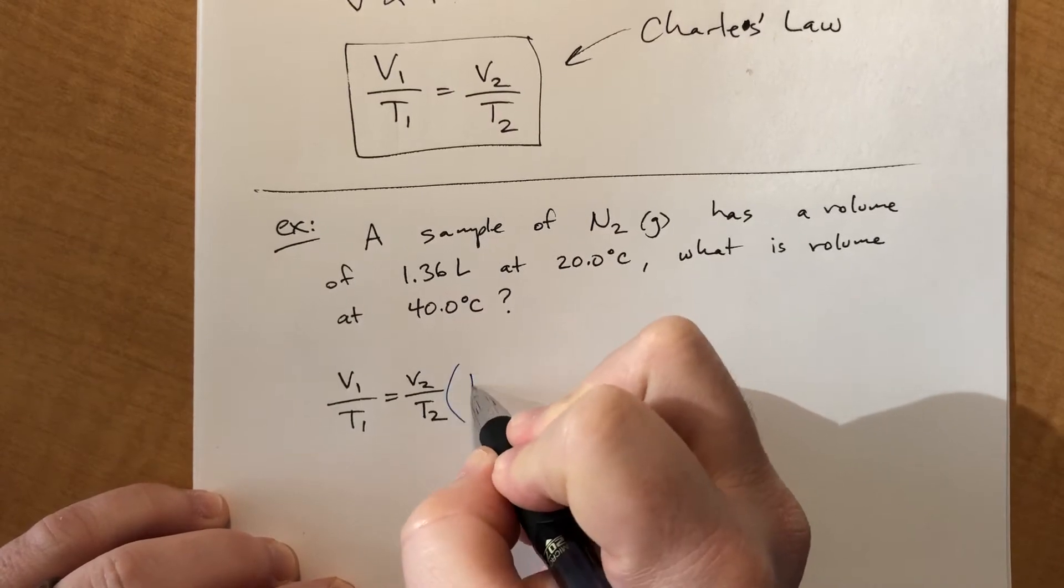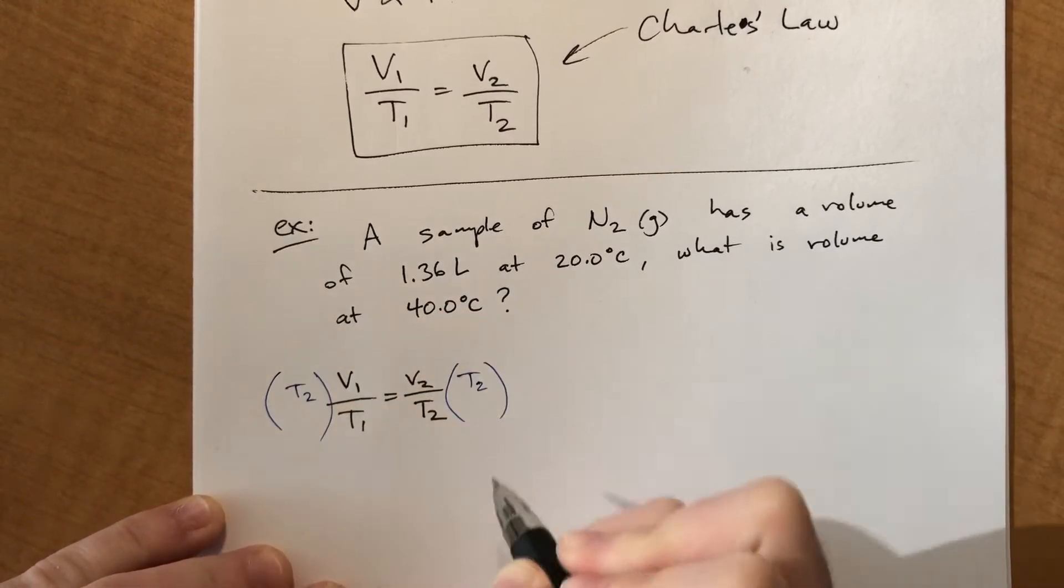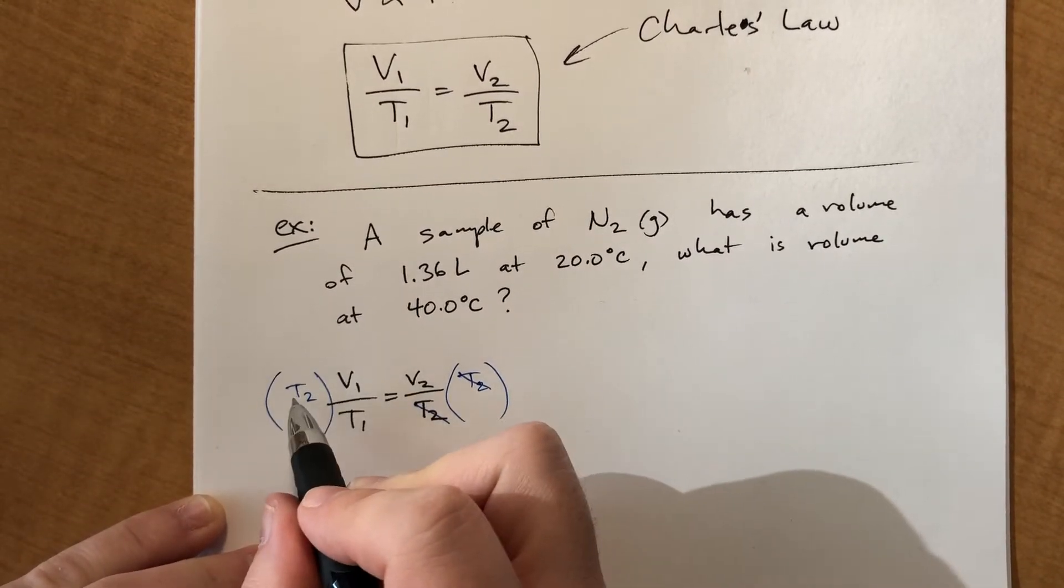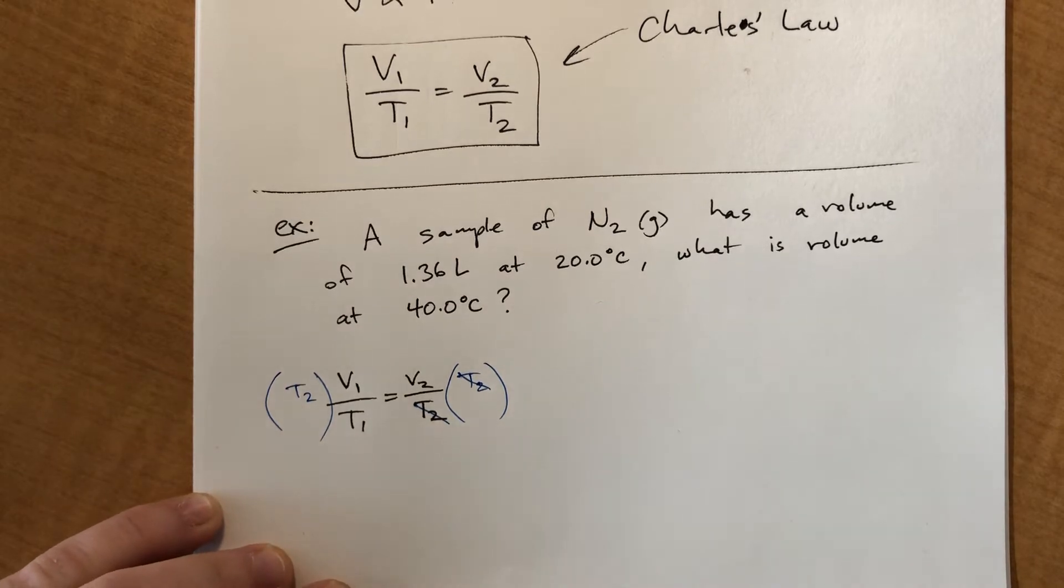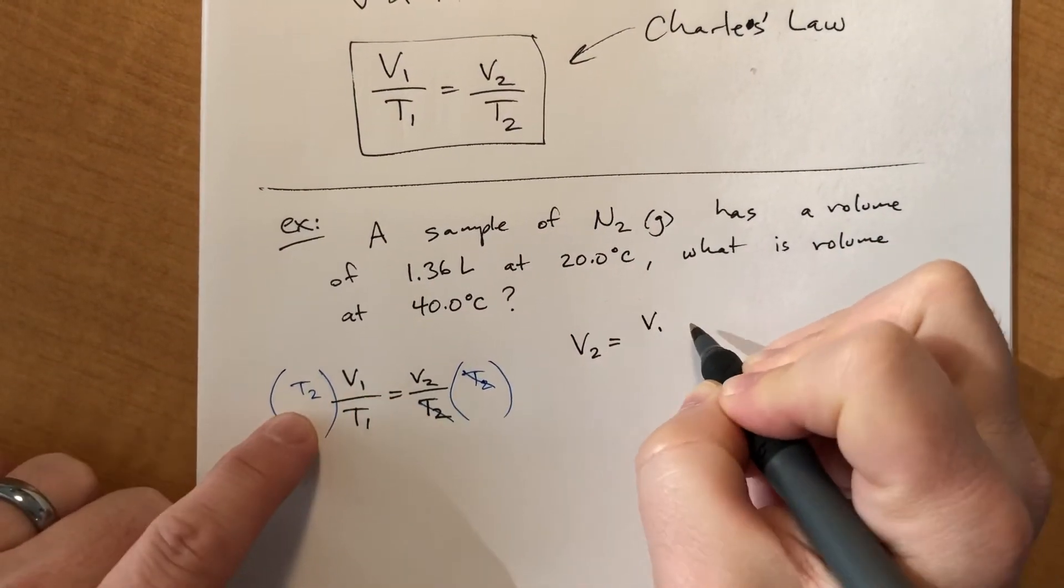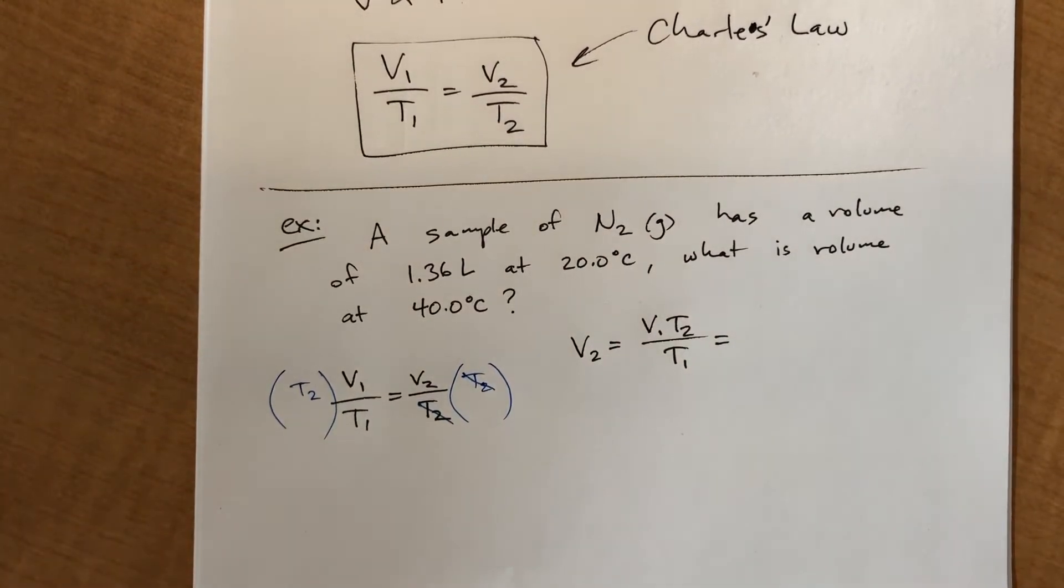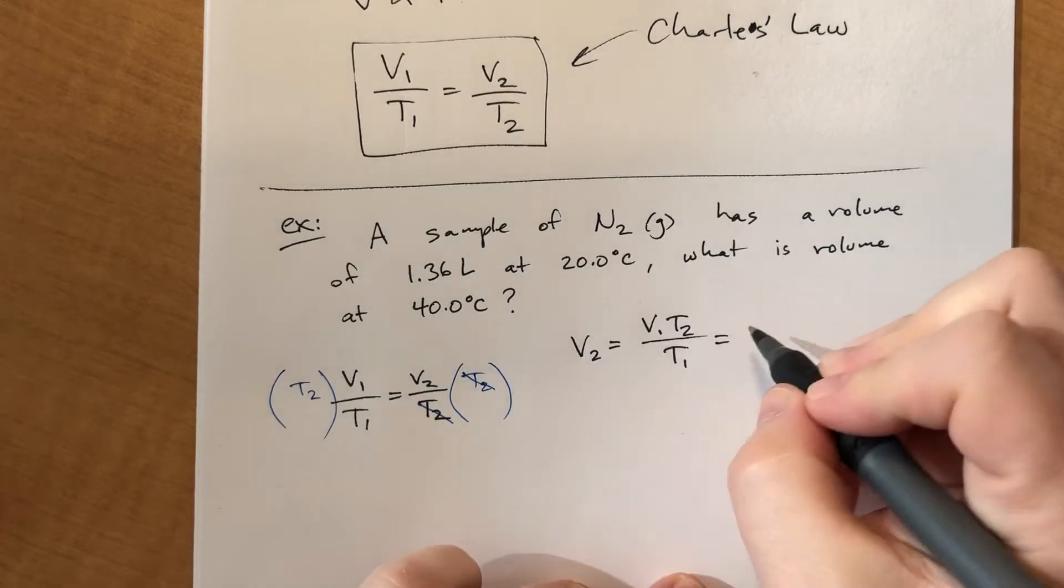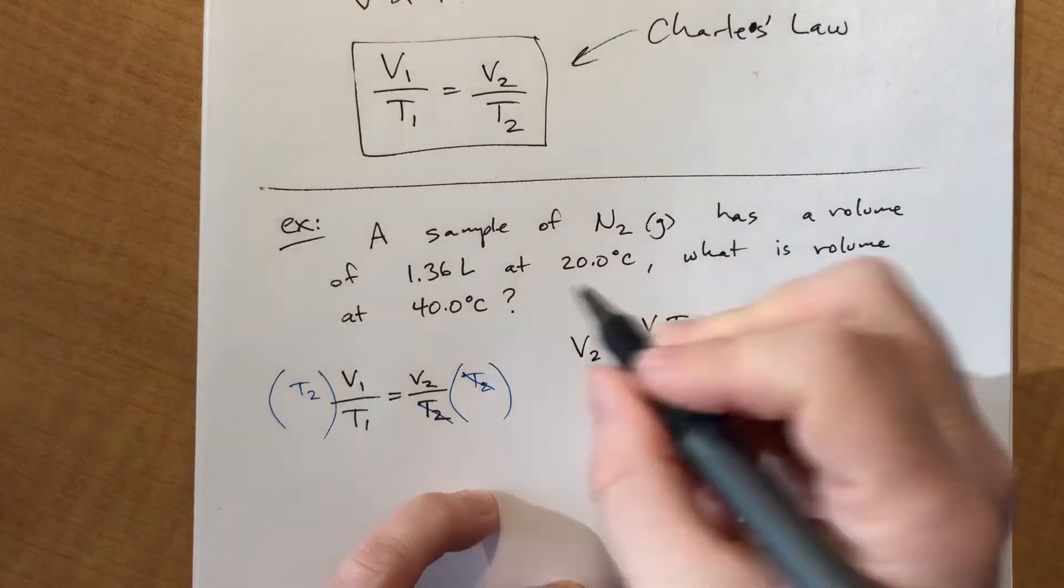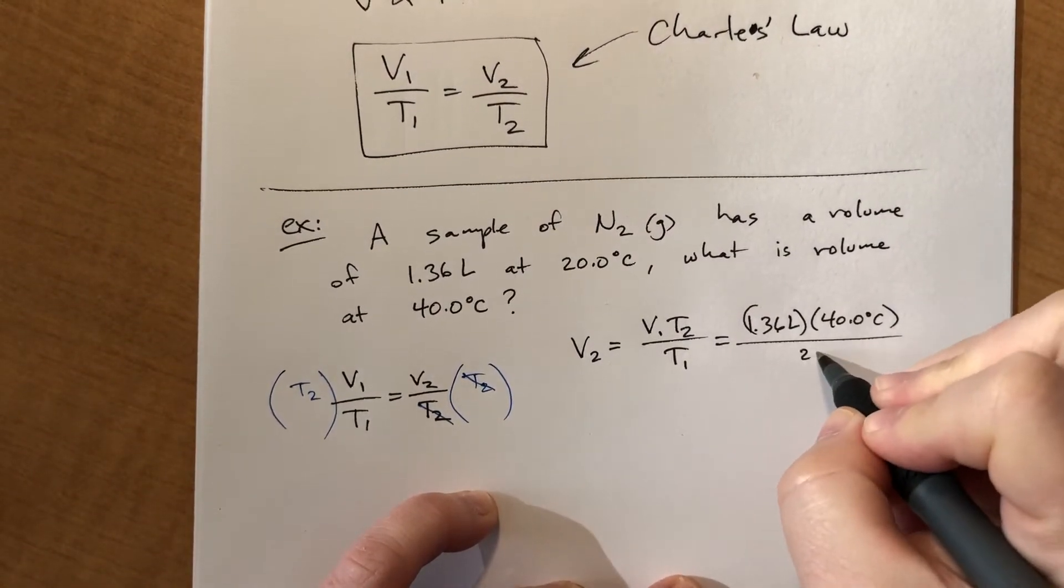So since it's in the bottom, we're going to multiply by T2. And whatever we do to one side, we're going to have to do to both sides. So on this side, it cancels out. We're left with V2. And on this side, we have V1 T2 over T1. So I'm going to rewrite that. V1 and T2 are on the top, divided by T1. So we have these numbers. Plug them in. V1 is 1.36. T2 is 40. And T1 is 20.